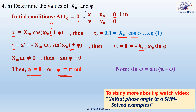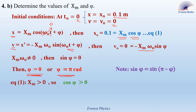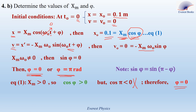Going back to equation 1, xm is positive and we have plus 0.1, so cosine(φ) must be positive. Cosine(π) is negative, so φ equals π is not our choice. Cosine(0) equals plus 1, which is positive, so φ equals 0 is the chosen angle. To calculate xm, from equation 1: xm equals 0.1 divided by cosine(0) equals 0.1 meters.